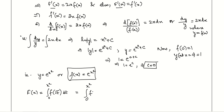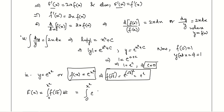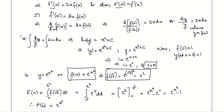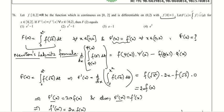f(√t) = e^((√t)²) = e^t. Substituting back, F(x) = integral from 0 to x² of e^t dt = [e^t] from 0 to x² = e^(x²) - e^0 = e^(x²) - 1. Therefore F(2) means putting x = 2: F(2) = e^(2²) - 1 = e^4 - 1. So the answer is e^4 - 1.